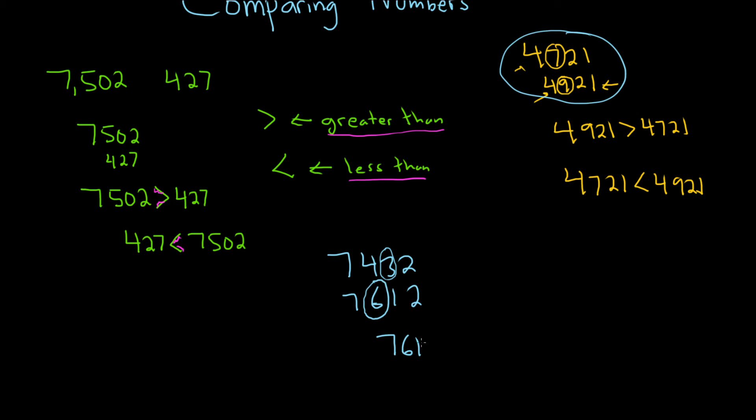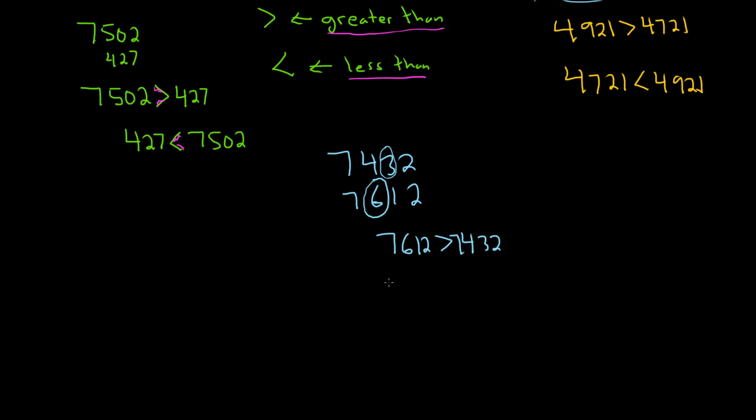So 7612 is greater than 7432. And if you want to write it backwards, you would write 7432 is less than 7612.